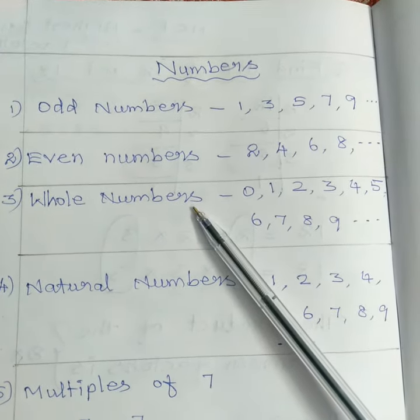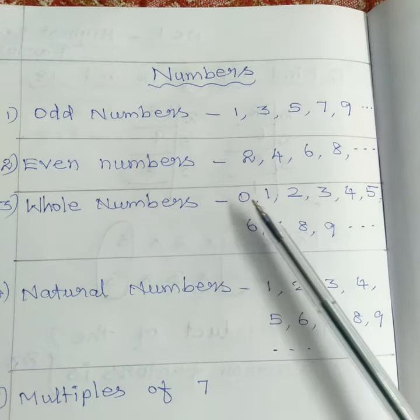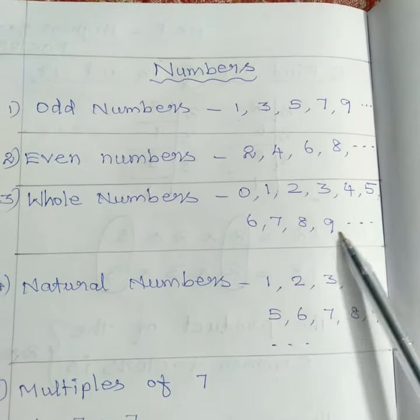Then whole numbers. Whole numbers starting from 0, 1, 2, 3, 4, 5, 6, 7, 8, 9.